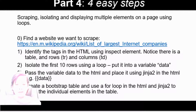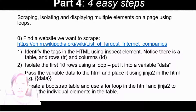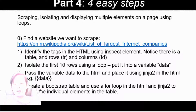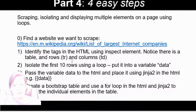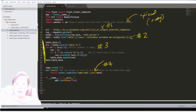There are actually five steps - I've started with a zero index like a Python array. We're going to find a website to scrape, and this time I thought it'd be interesting to use Wikipedia, which is a great database - specifically the largest internet companies. We'll get information like the revenue and the rank, find the HTML tags, use a for loop to get all companies, and put them into a Bootstrap table.